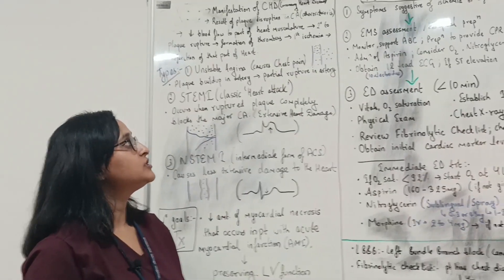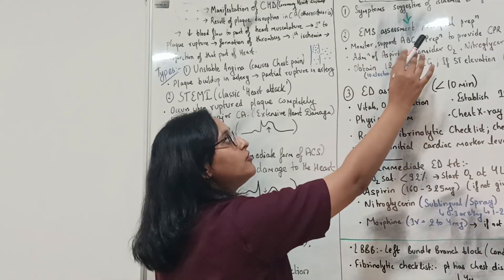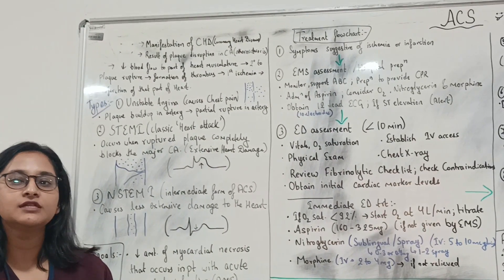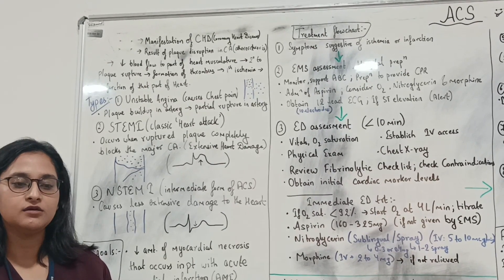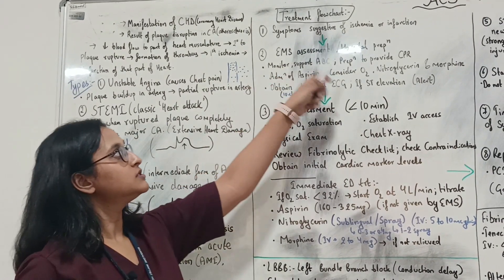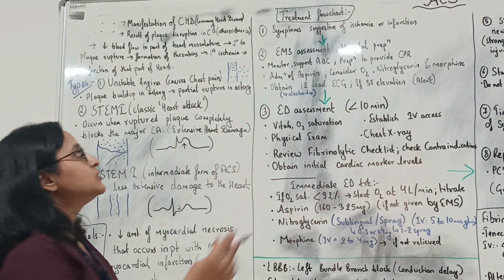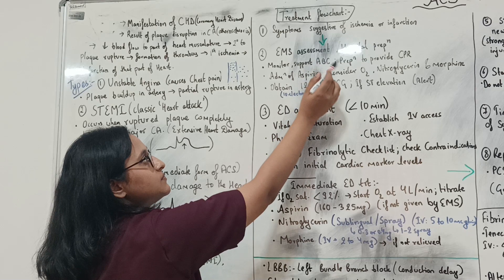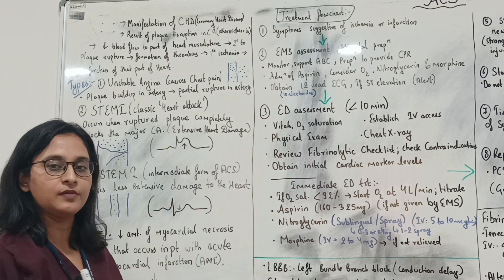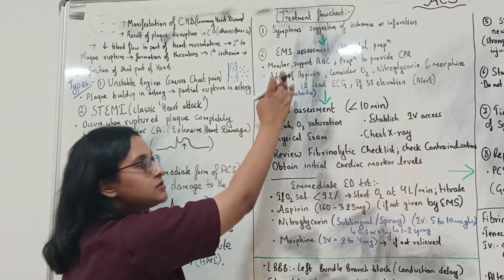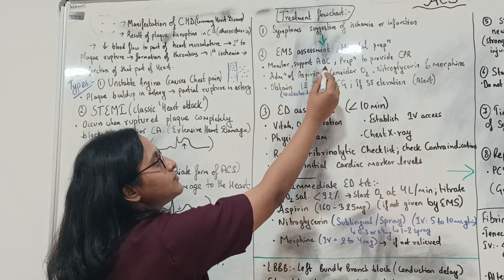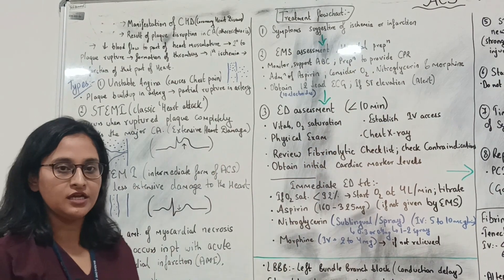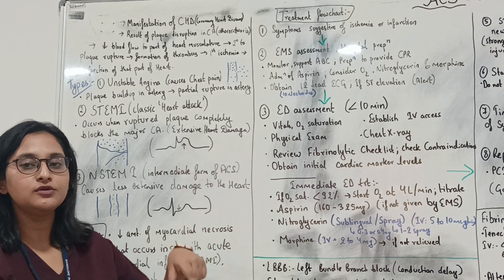In the treatment flowchart, the first step is to check for symptoms suggestive of ischemia or infarction in newly diagnosed patients — such as chest pain, chest discomfort, shortness of breath, and sweating. Prior to hospital admission, EMS assessment is done: monitor and support ABC — airway, breathing, circulation — and prepare to provide CPR.